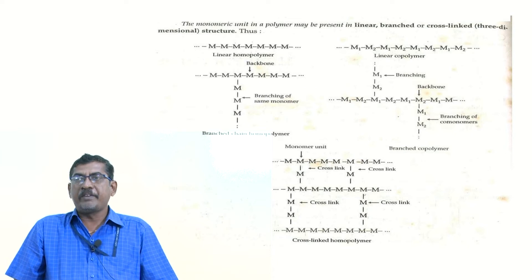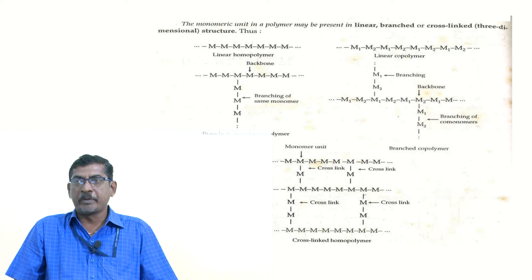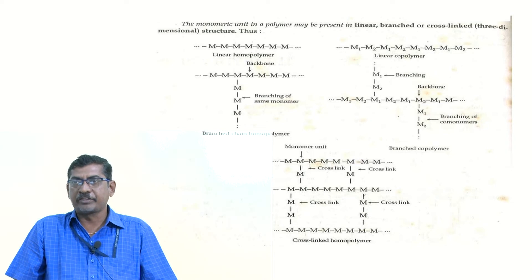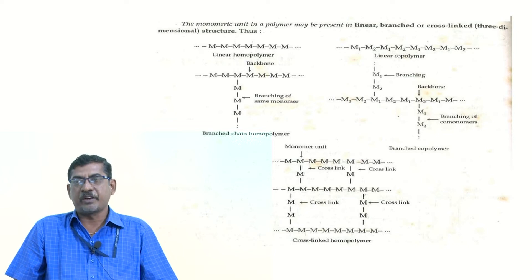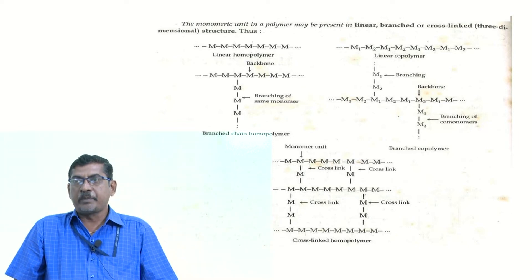Next, if the monomers in the polymer chain are present in a linear or straight-chain form, it is called a linear homopolymer — only one type of monomer in a straight chain. The second category is the branched-chain homopolymer: one type of monomer forms a straight main chain (the backbone), with only one branch of monomer attached to it.